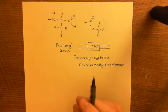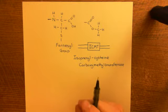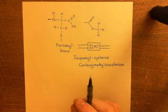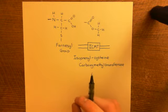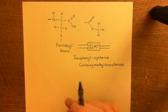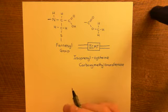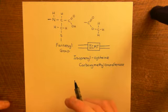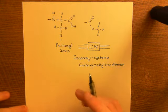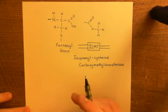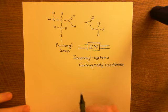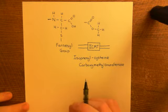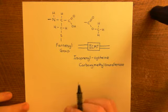Both of these modifications — the AAX proteolysis followed by the transfer of a methyl group — are considered post-prenylation modifications of the protein. Once these two modifications have been made, the RAS protein is ready to leave the ER membrane and move off.